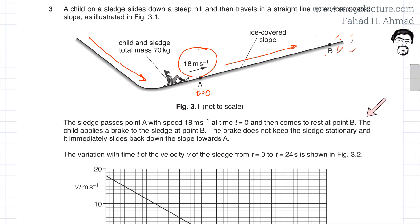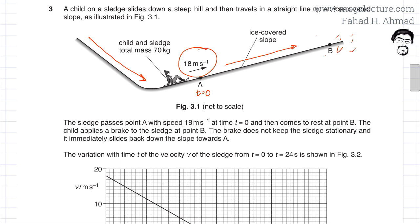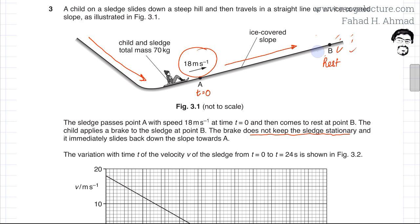The sledge comes to rest at point B. The child applies a brake at point B, but the brake does not keep the sledge stationary, and it immediately slides back down the slope towards A. So at point B, after coming to rest, the sledge starts moving back down the slope.